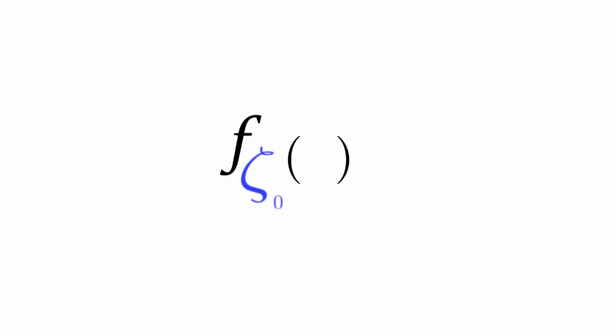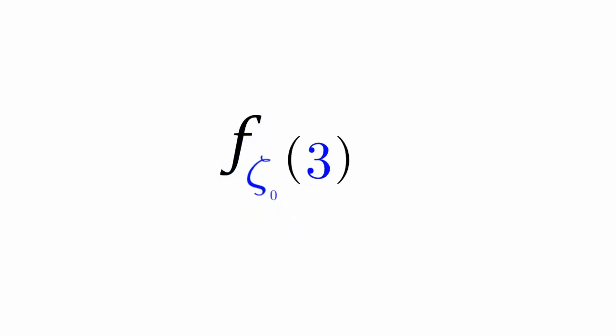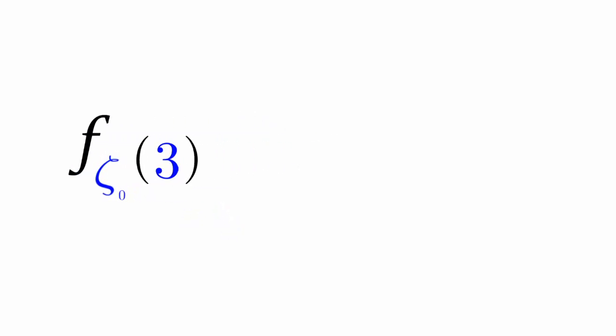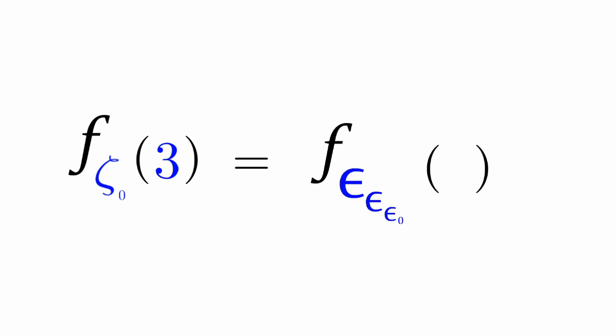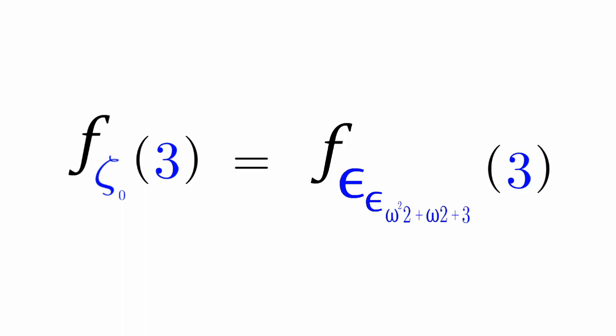Let's have f(ζ₀)(3). This is equal to f(ε_{ε_{ε_{ζ₀}}})(3). Epsilon naught turns into omega to the omega, and then it expands to omega cubed.